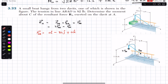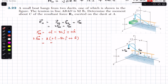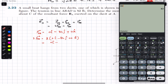Multiplying FAB by scalar 2 gives 2FAB = 2(0i − 82j + 0k) = 0i − 164j + 0k pounds.